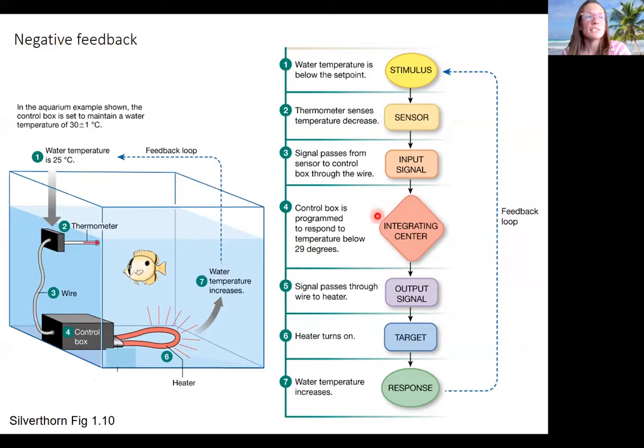Then we've got this integrating center or control center where it's going to decide whether to respond. So here's the control box of the aquarium. If the temperature is below 29 degrees, it's designed to turn on, to tell the system to do something. In this case, the output signal is going to tell the target, which is the heater, to turn on. Temperature's low, turn the heat on.